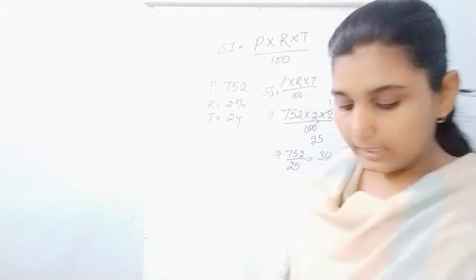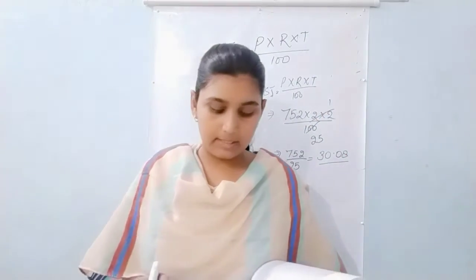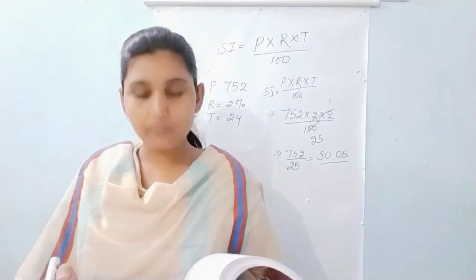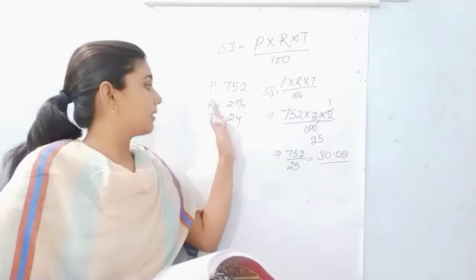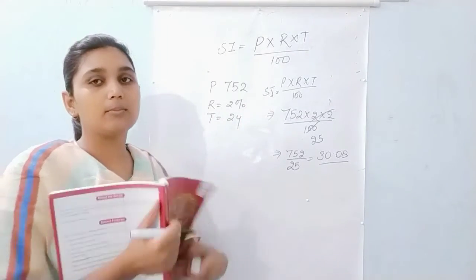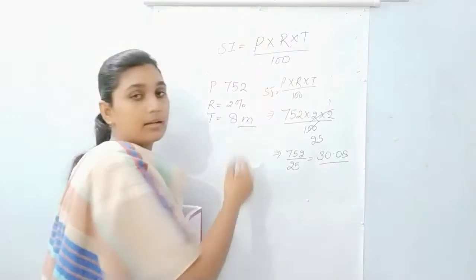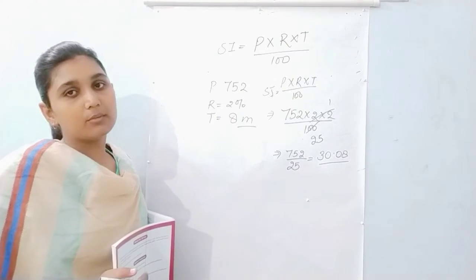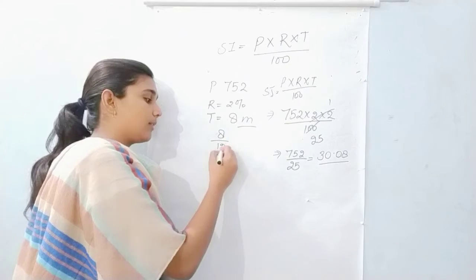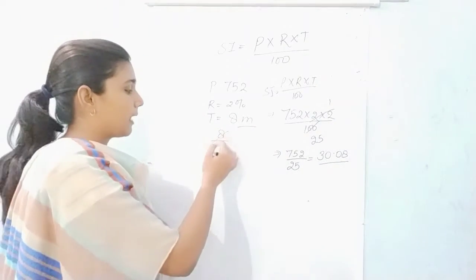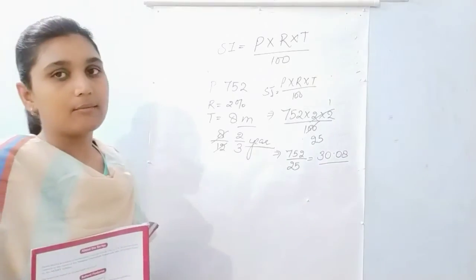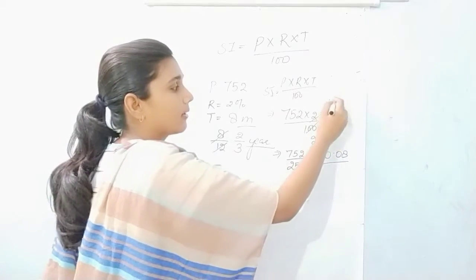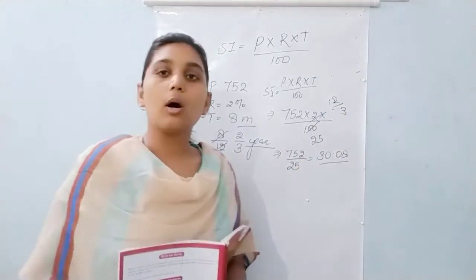Now we are going to see question number 2: find the simple interest on Rs.1500 at 7% per annum for 8 months. Is question mein principle diya gaya hai 1500, rate diya gaya hai 7%, aur time diya gaya hai 8 months. Agar time 8 months diya gaya hai to aapko isko year mein convert karna hai — 8 upon 12 likhte hain, jo 2 upon 3 year hoga. Same formula put karo aur answer mil jaayega.